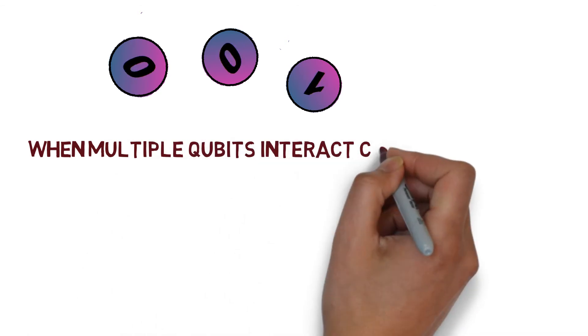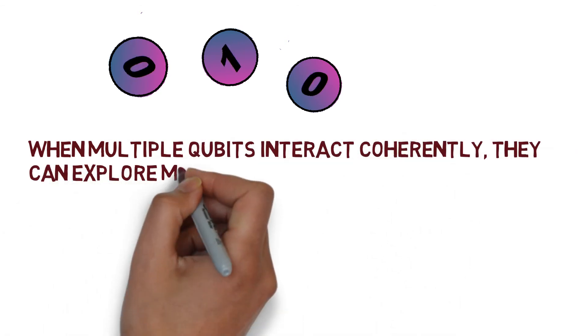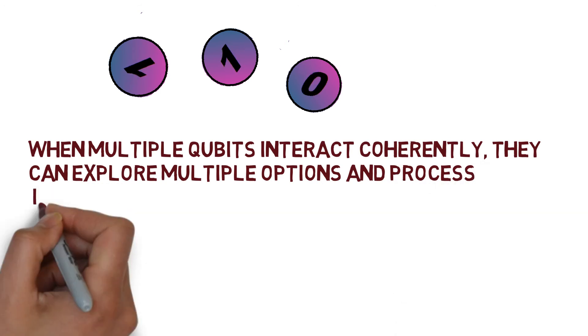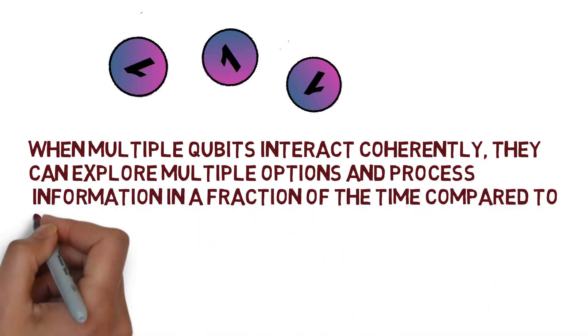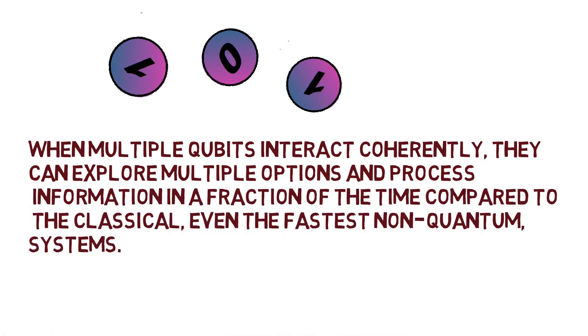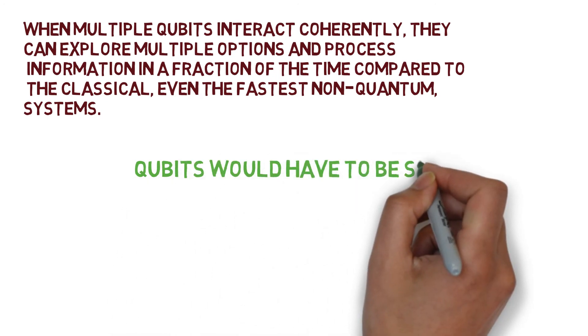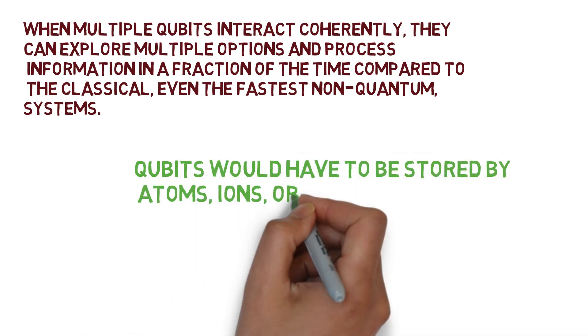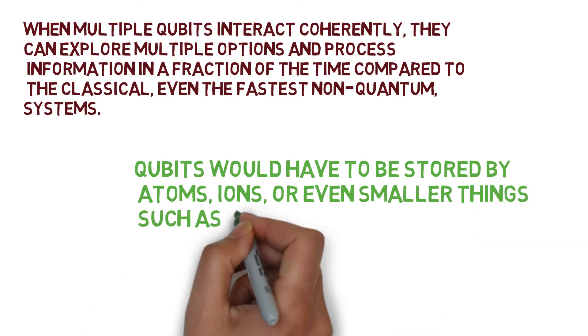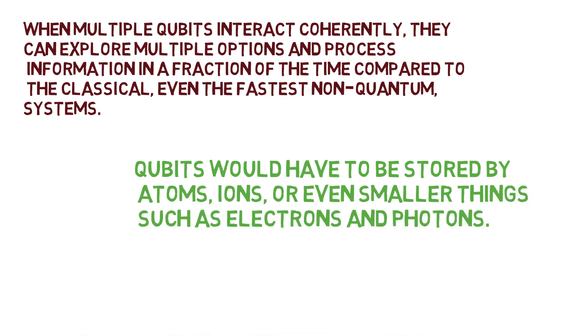When multiple qubits interact coherently, they can explore multiple options and process information in a fraction of the time compared to classical computing or even the fastest non-quantum systems. Qubits would have to be stored by atoms, ions or even smaller things such as electrons and photons.